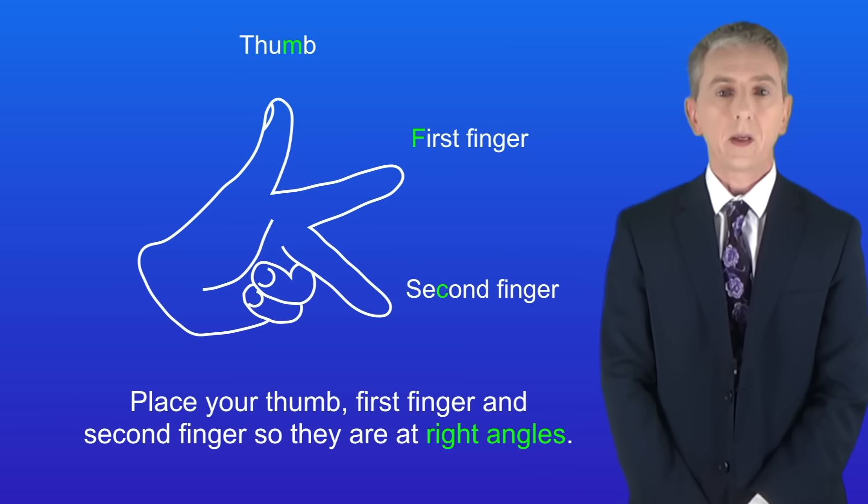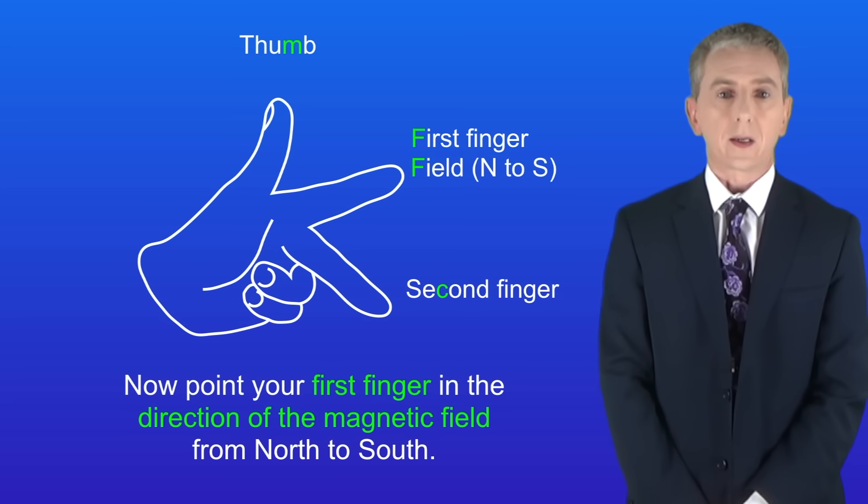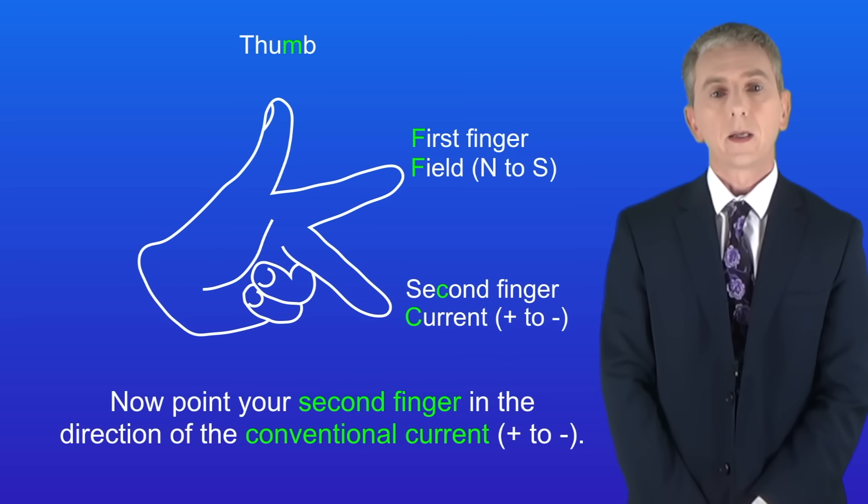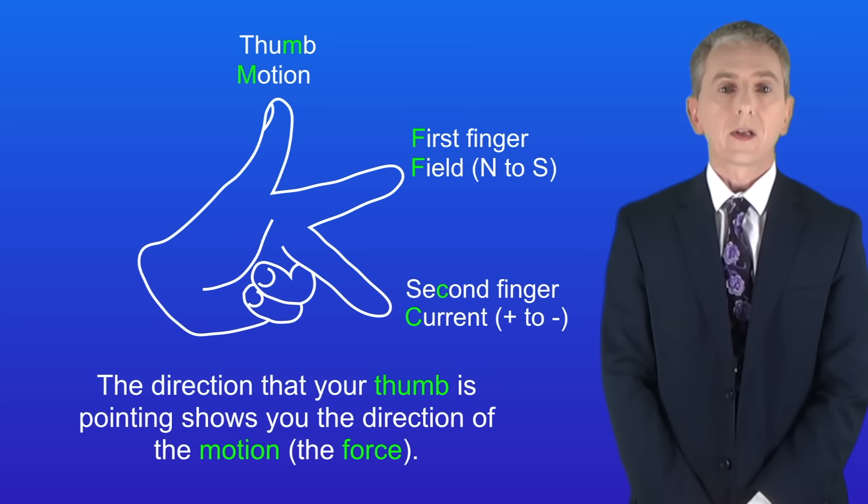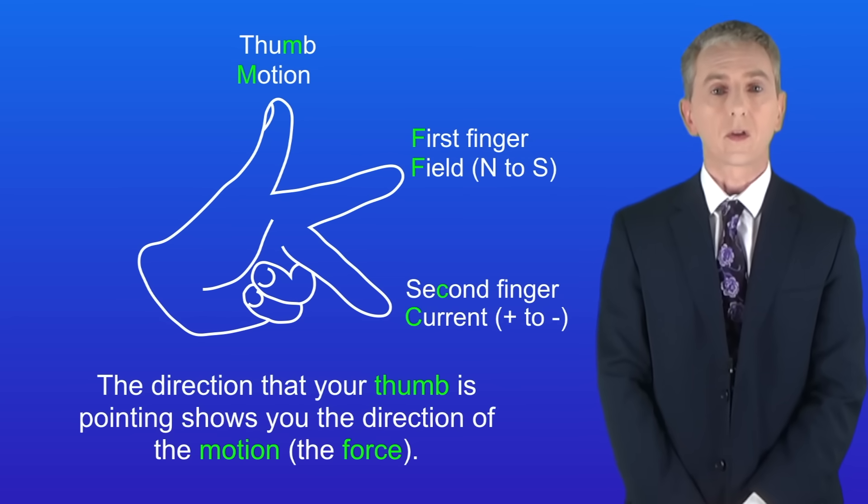Place your thumb, first finger and second finger so they're at right angles like this. Now point your first finger in the direction of the magnetic field from north to south. Now point your second finger in the direction of the conventional current, in other words positive to negative. Finally, the direction that your thumb is pointing shows you the direction of the motion, in other words the force.